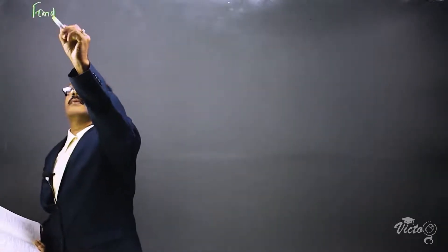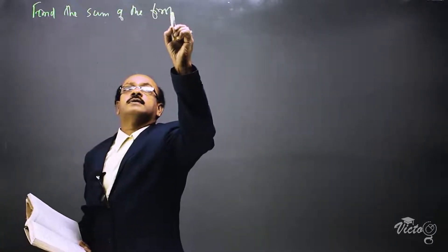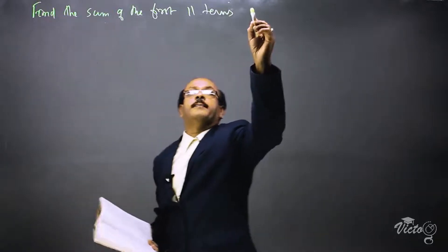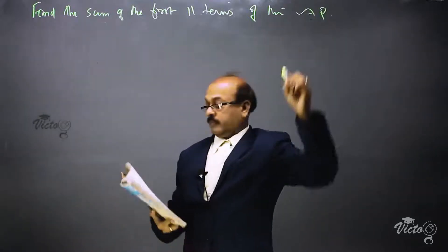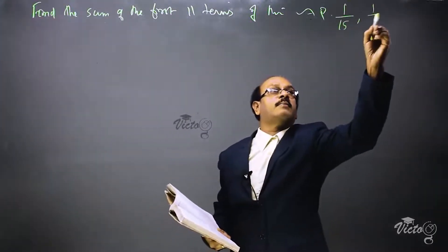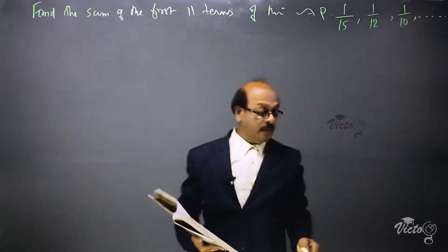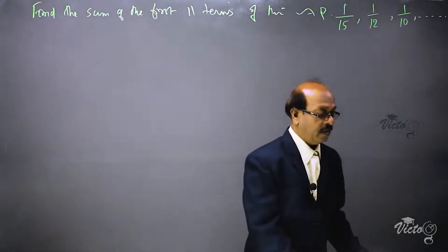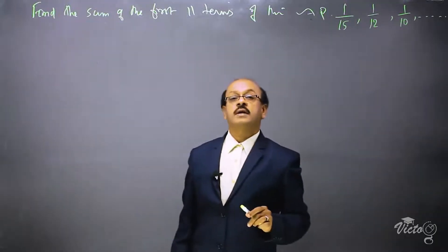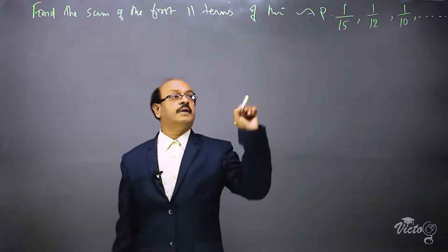The next question is: find the sum of the first 11 terms of the AP 1/15, 1/12, 1/10, etc. Here the given arithmetic progression is of fractional form — the terms are all fractions. We have to find out the sum of the first 11 terms of this AP.